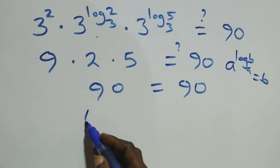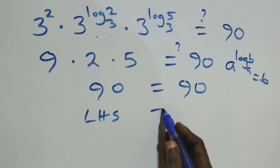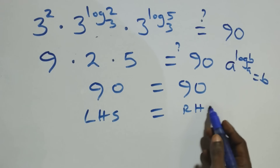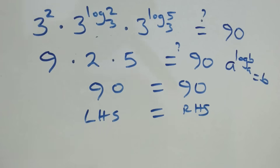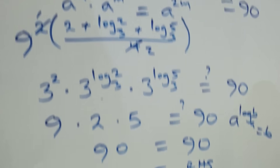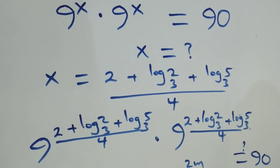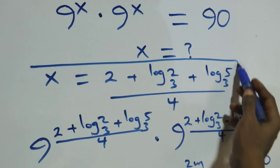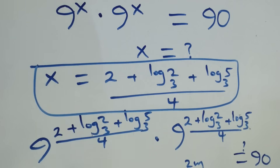We have the left-hand side equals the right-hand side, and therefore we conclude that x equals 2 plus log base 3 of 2 plus log base 3 of 5, all over 4, satisfies this given problem. Thank you for watching — don't forget to subscribe for more videos, turn on the notification bell, share this video, give a thumbs up, and put your comments. See you next class, bye for now.